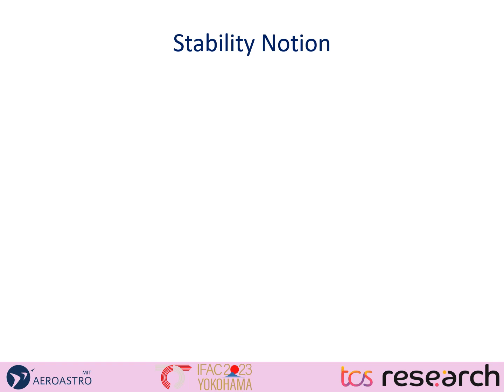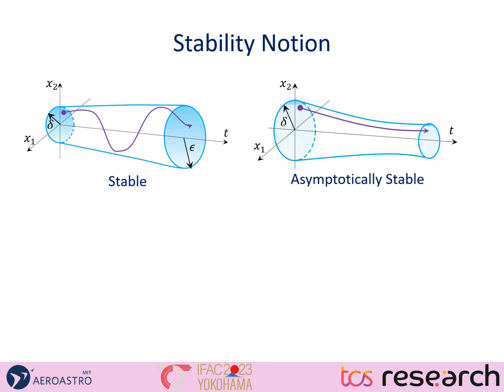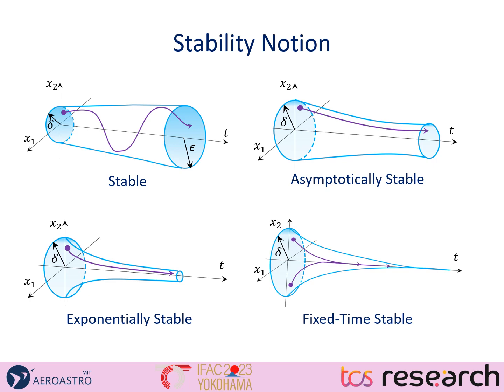Because we've been talking about exponential stability and fixed-time stability, let me quickly introduce these different notions of stability. We all know Lyapunov stability: if we start closer to the equilibrium point, we do not go very far away from it. An asymptotically stable equilibrium point is where trajectories converge to the equilibrium point as time tends to infinity. Exponential stability is slightly stronger, with an exponential rate of convergence. And finally, the notion we are most interested in is fixed-time stability, where trajectories converge exactly to the equilibrium point within a given fixed amount of time — we don't have to wait until time goes to infinity for convergence to happen.